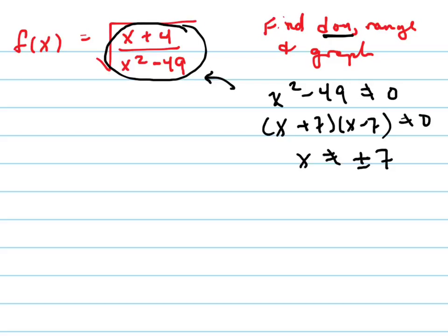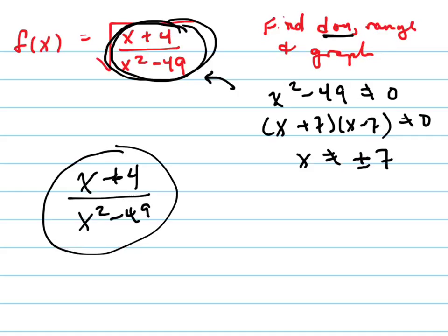But there's more of a domain restriction because that entire thing on the inside has to be positive. So what we learn to do here is we graph this whole thing, not considering the square root. Take off the square root sign and consider what that graph looks like, and then determine when is that positive and when is it negative. This is a rational function.